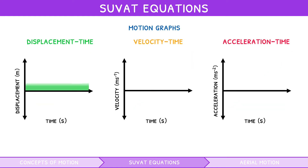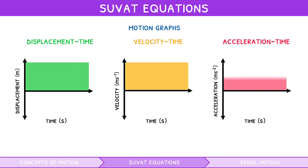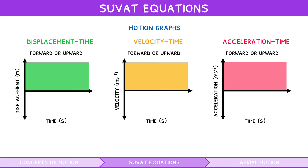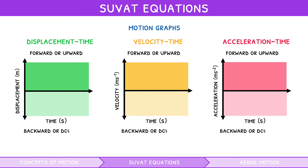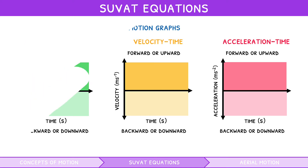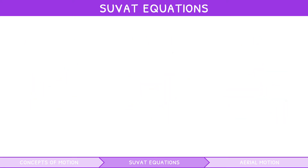In these graphs, positive displacement, velocity, and acceleration are typically used for objects going forward or upward, whereas negative displacement, velocity, and acceleration are typically used for objects going backwards or downwards. Flat, sloped, or curved lines in each of these graphs have different meanings, so let's explore these.